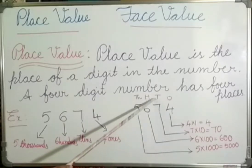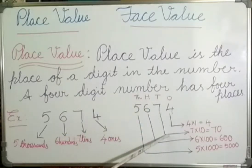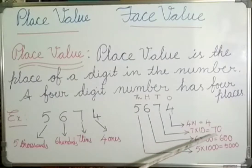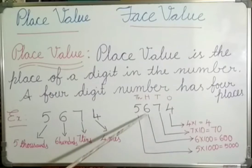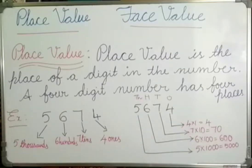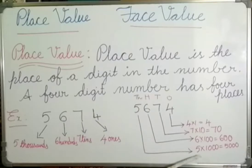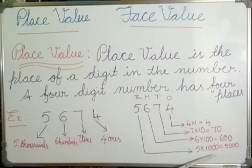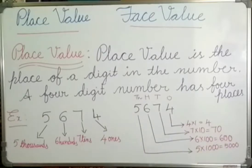7 is at the 10's place — 7 × 10 — so the place value of 7 is 70. 6 is at the 100's place — 6 × 100 — so the place value of 6 is 600. 5 is at the 1000's place — 5 × 1000 — so the place value of 5 is 5000.